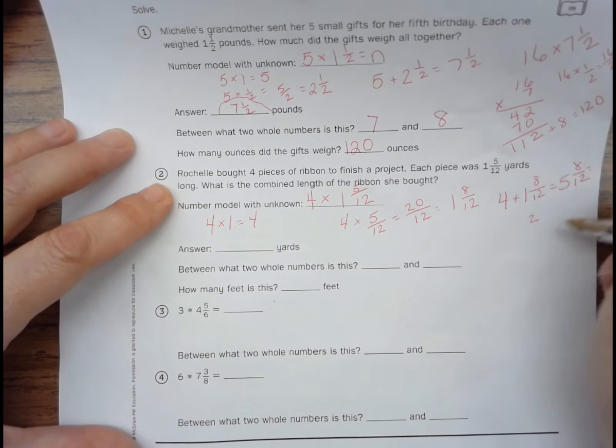Between what two whole numbers is this? Five and six. How many feet is this?